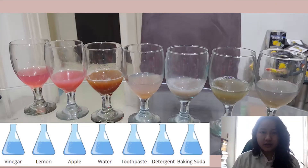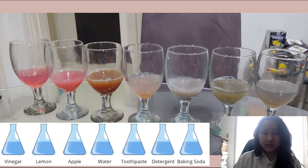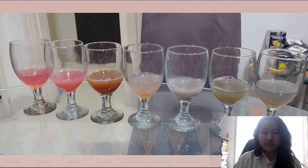After conducting the experiment, we see that grape juice turns acids into a pinkish color and bases into a greenish color. So, in conclusion, grapes can be used as a natural indicator for both acids and bases.